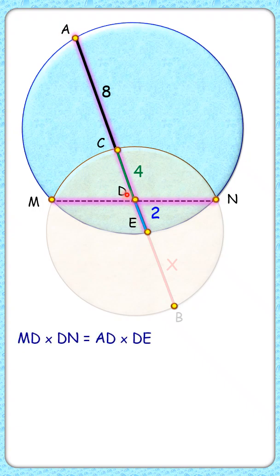Putting the values here, AD is 12 centimeters and DE is 2 centimeters, so MD times DN is 24 centimeters.